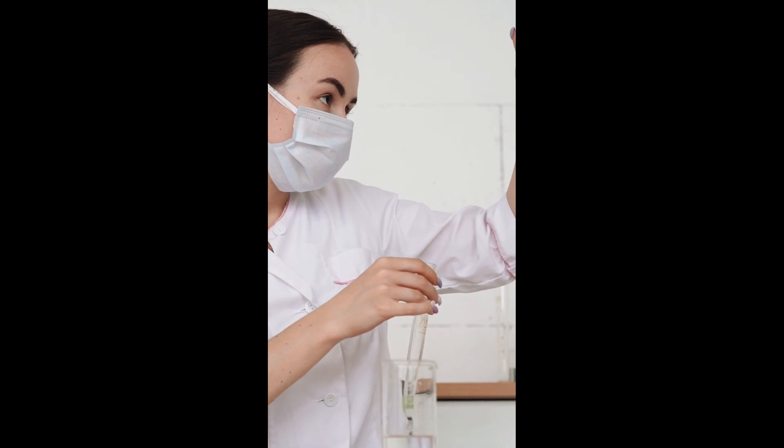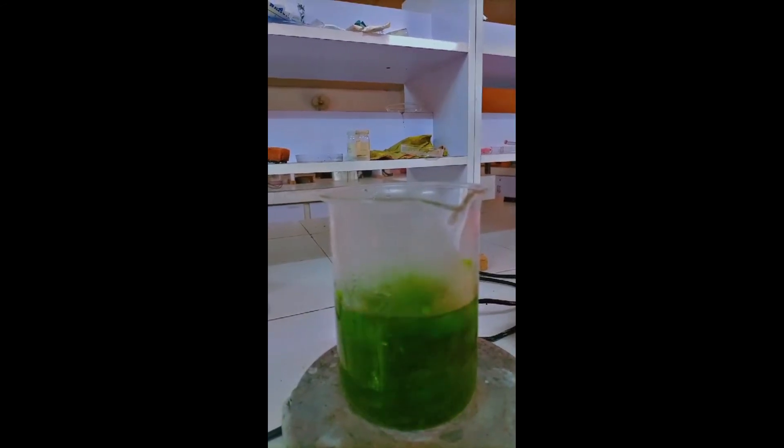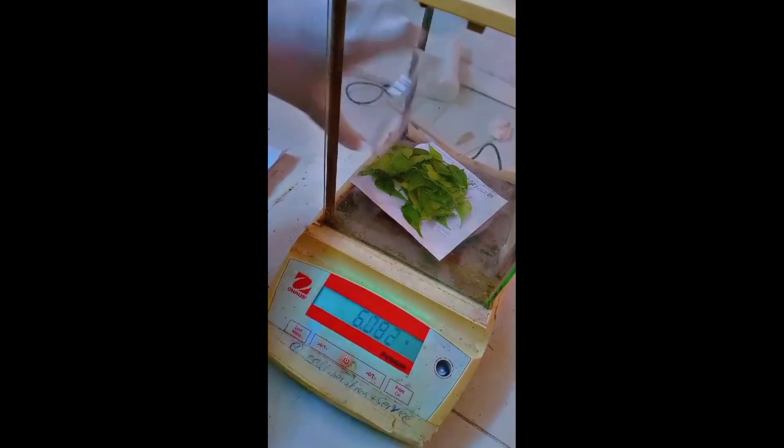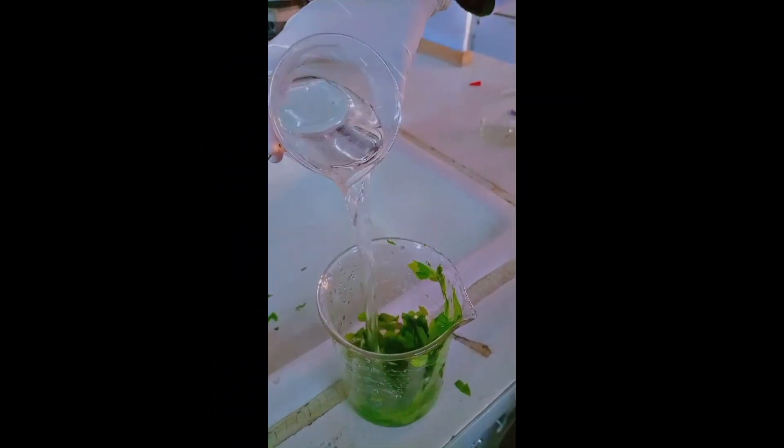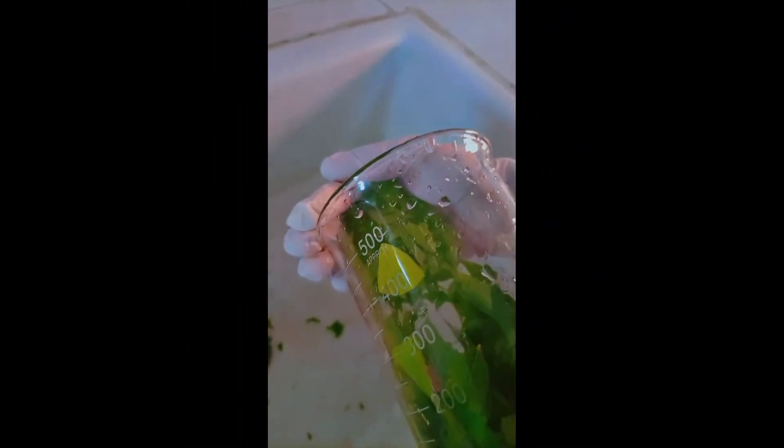First, we will prepare the neem extract. Take fresh neem leaves and weigh them accurately. Use a knife or scissors to finely chop the neem leaves - this increases the surface area for extraction. Now rinse the leaves thoroughly with distilled water to remove dust and impurities. Make sure to use distilled water, not tap water.